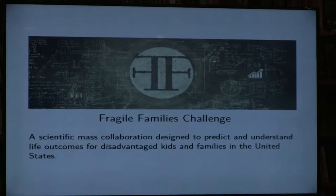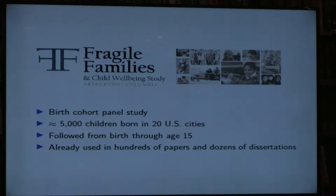This is the Fragile Families Challenge: a scientific mass collaboration designed to predict and understand life outcomes of disadvantaged kids and families in the US. The empirical setting is the Fragile Families and Child Wellbeing Study that Sarah and her colleagues have worked on for the last 20 years — it's an amazing treasure. They sampled 5,000 children born in 20 US cities and followed them from birth to age 15, with an oversample of non-marital births. This data has already been used in hundreds of papers and dozens of dissertations, but we want to use it in a very different way — flipping from the beta hat approach to the y hat approach.